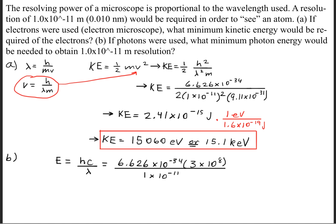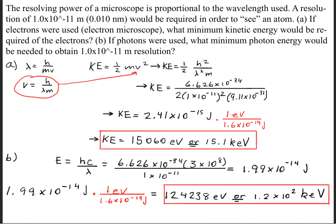Now we'll go ahead and substitute in our values for the variables, and we'll get the energy to be 1.99 times 10 to the negative 14th joules. Once again, we'll need to convert that to electron volts, and we'll get an answer of 124,238 electron volts, or we can write that as 1.2 times 10 to the second power kilo electron volts.